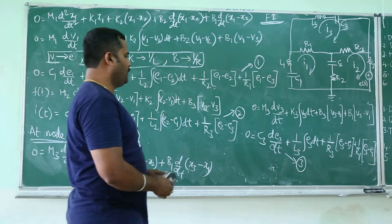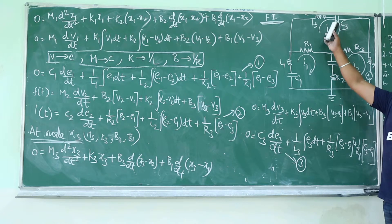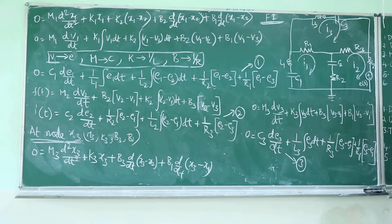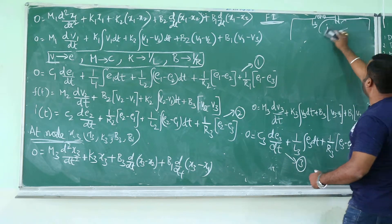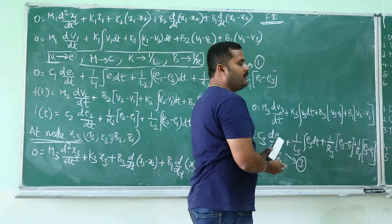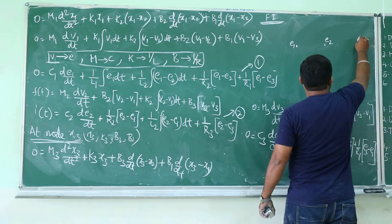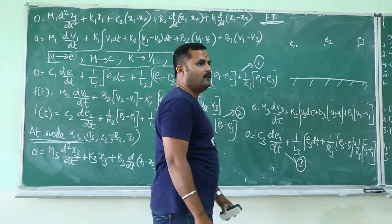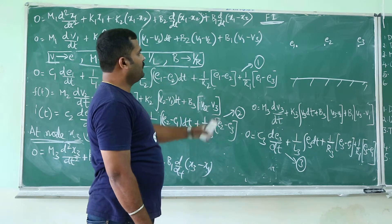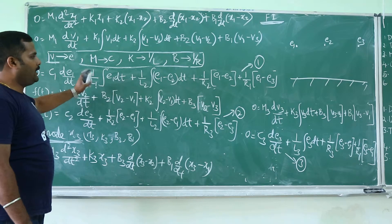So all three equations are now written. By looking into the equations we need to draw the network. It is very important — earlier we had mesh currents, now we get node voltages. E1, E2, and E3 are three node voltages. So to write the analogous network, we need three nodes: E1, E2, E3, and the reference node is ground. Now, what are the components connected only to E1? C1 and L1 — that is it.